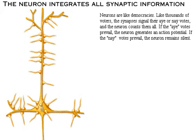Neurons are like democracies. Like thousands of voters, the synapses signal their aye or nay votes and the neuron counts them all. If the aye votes prevail, the neuron generates the action potential. If the nay votes prevail, the neuron remains silent. Click the synapses to see this action.